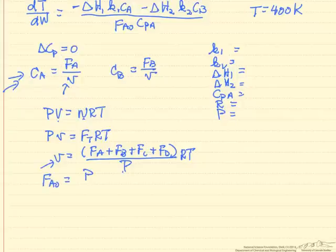I'm also going to use this to calculate my initial condition, FA0, pressure times the initial volumetric flow rate over RT, and the initial volumetric flow rate we're given in the problem statement is 25.